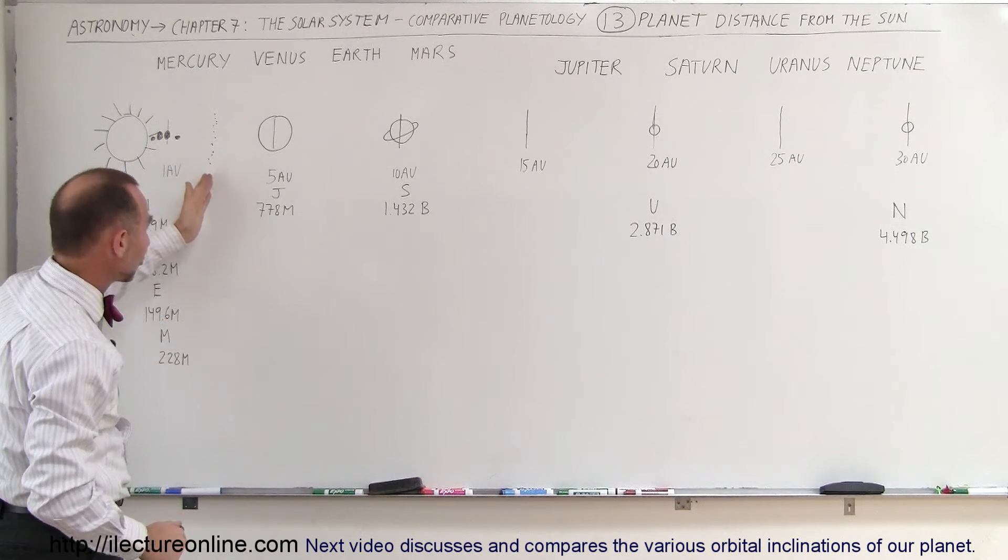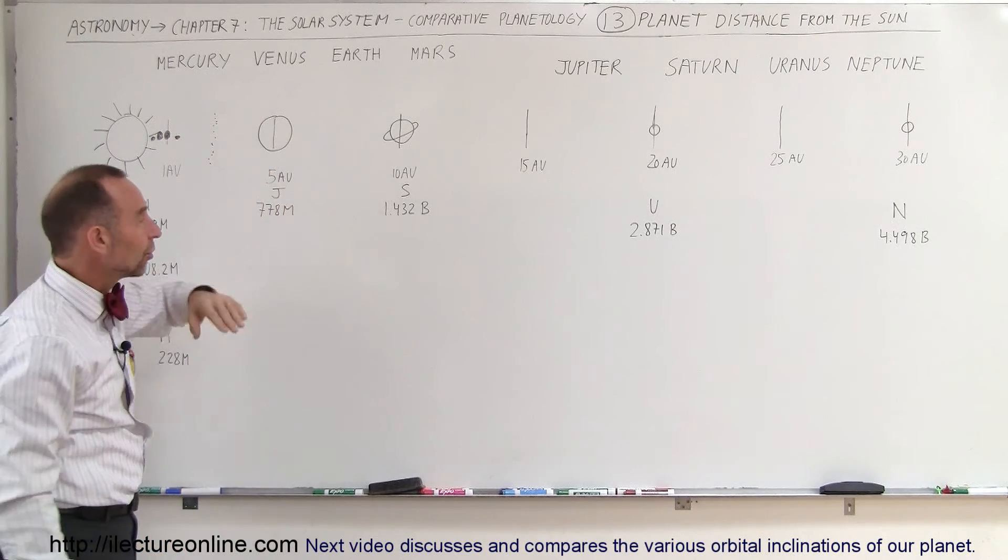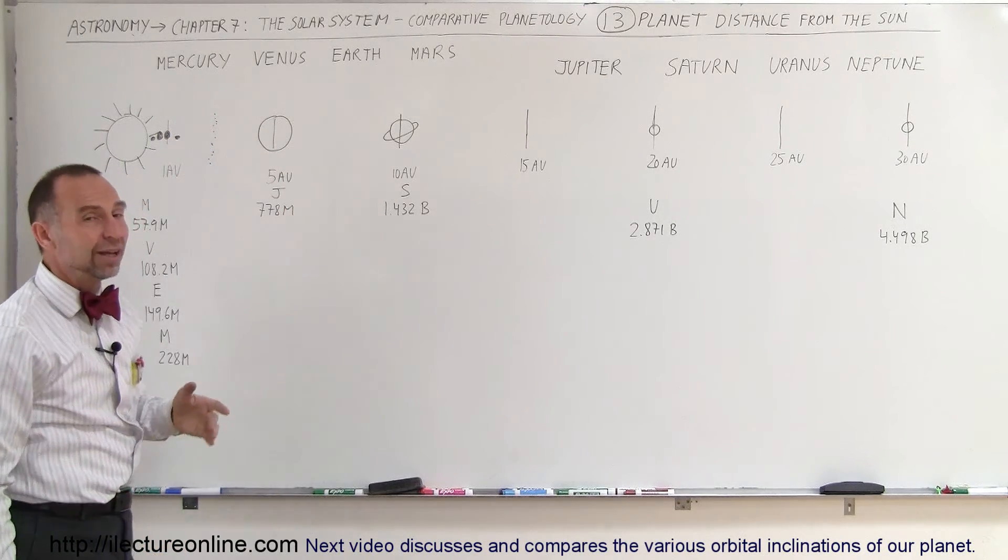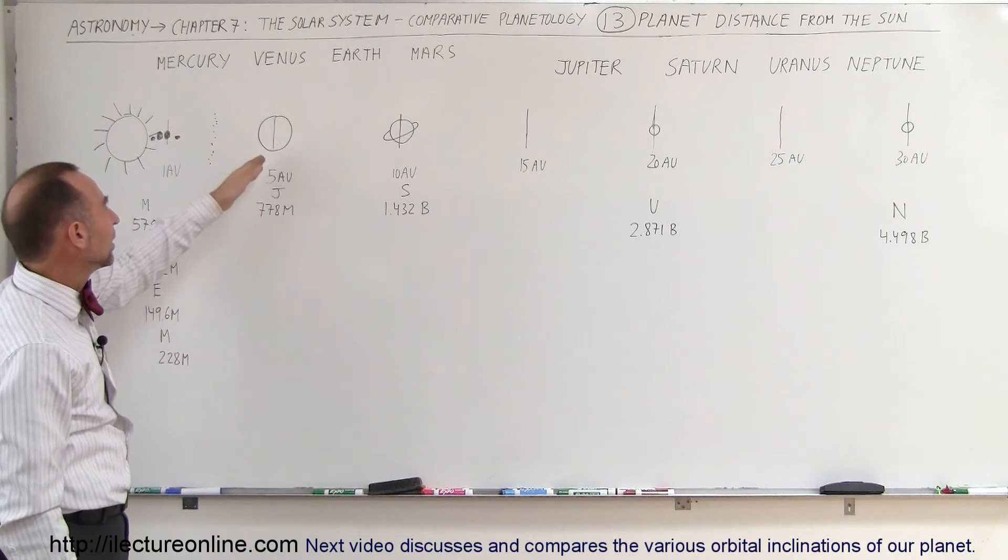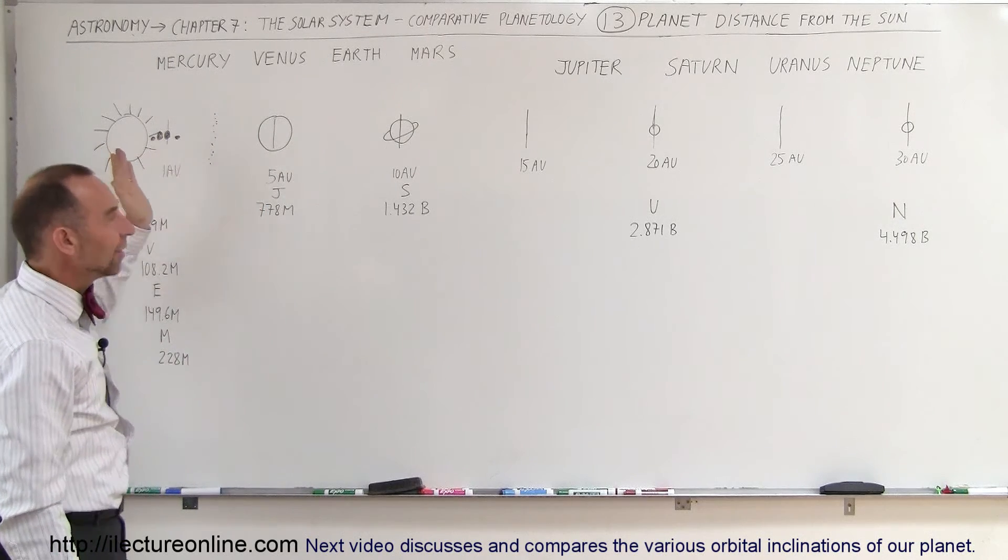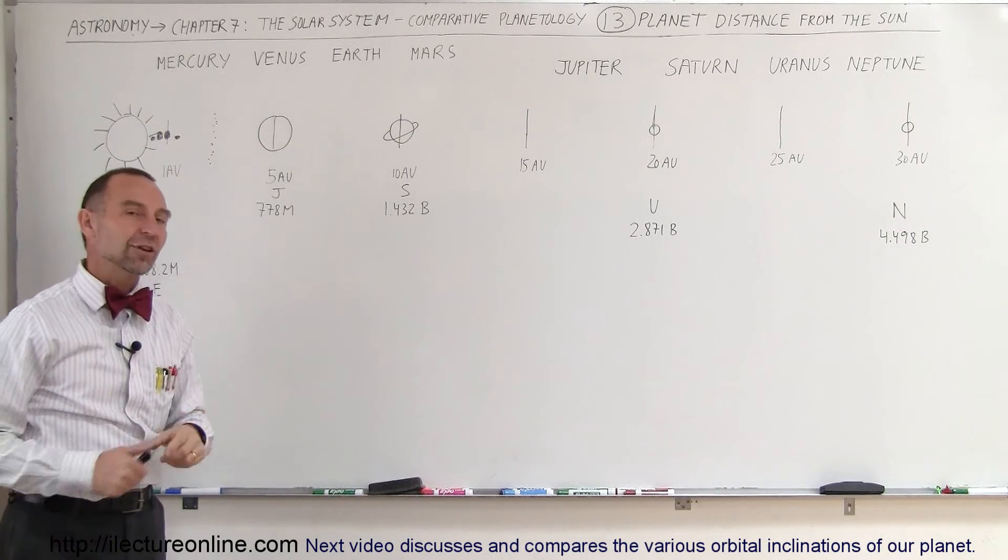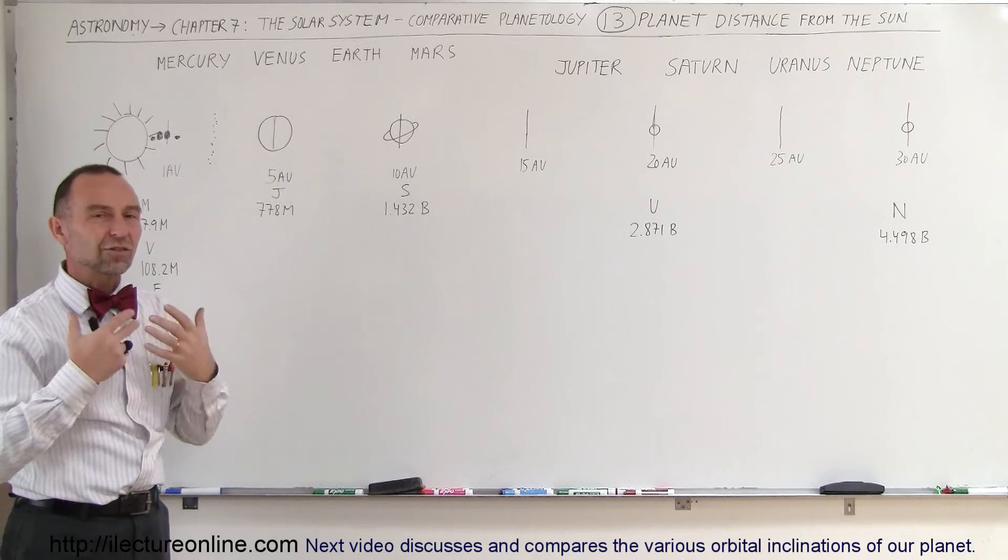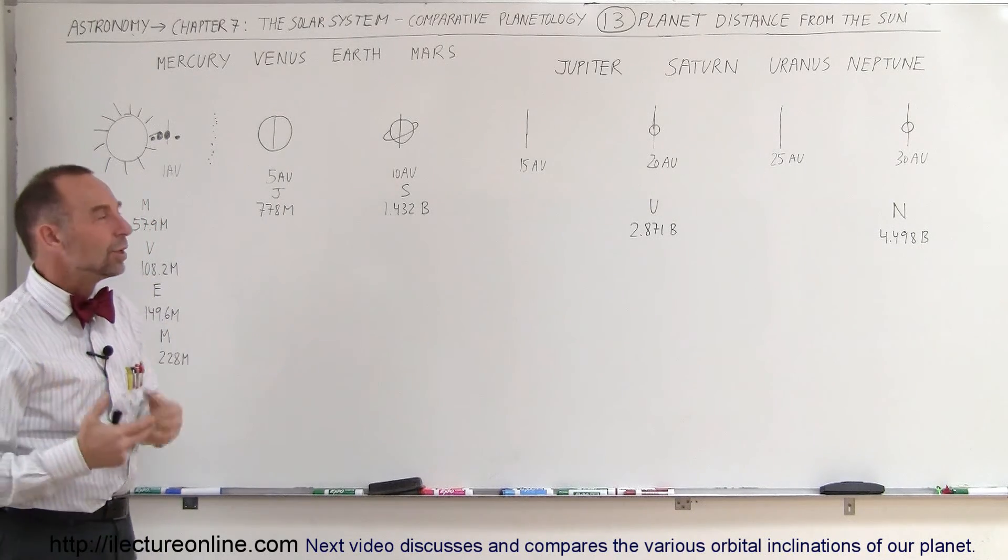And then, of course, once you pass the asteroid belt and you get into the outer solar system, where the gas planets are, there are enormous distances between the gas planets and the Sun, and the temperatures are just absolutely frigid out there, because the distance is so far that the heat of the Sun simply doesn't reach there in meaningful quantities.